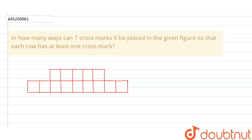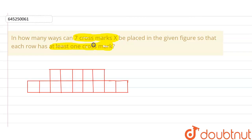Hello friend. Here we have a question: in how many ways can 7 cross marks be placed in the given figure so that each row has at least one cross mark? At least one means equal to one or more than one. We have two rows here — this is row one.